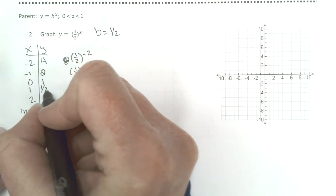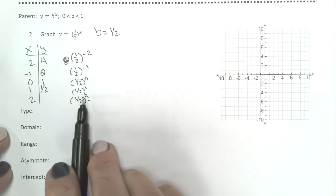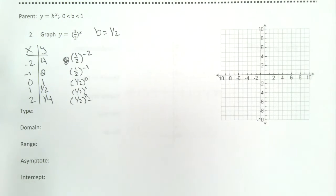1 half to the first power is 1 half. And 1 half to the second power, you've got to square both of those. And that gives you 1 fourth. These are my points that I'm going to plot.